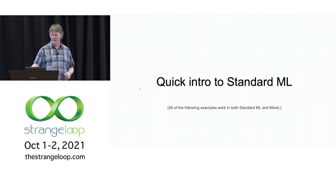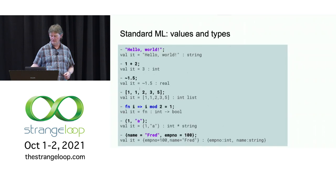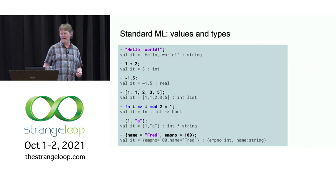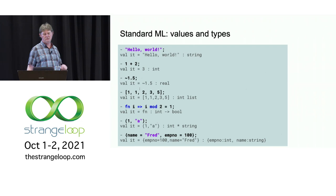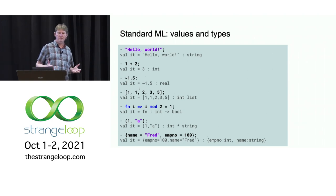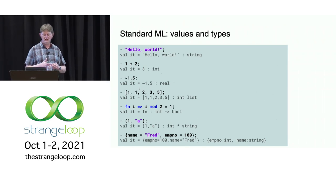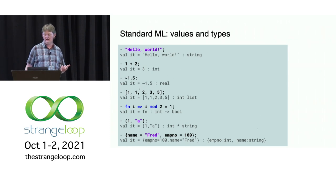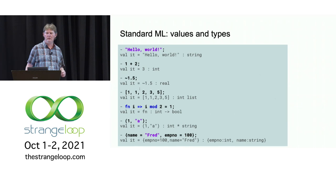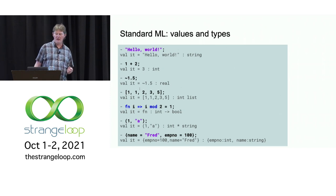Quick intro to Standard ML. Standard ML and Morel have a read-eval-print loop — the hyphen is the prompt, hello world is the expression, and what's below it is what the system prints. So we're looking at hello world which is a string, one plus two working on integers, reals, lists, and lists with polymorphism — you can have a list of any type variable. Functions are a built-in type — lambdas. Standard ML uses 'fn' where Haskell would use backslash. You can have tuples, which are basically like anonymous records: one comma a is a tuple of type int times string.